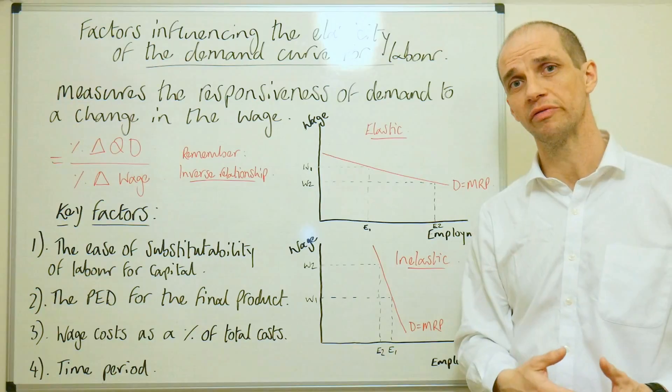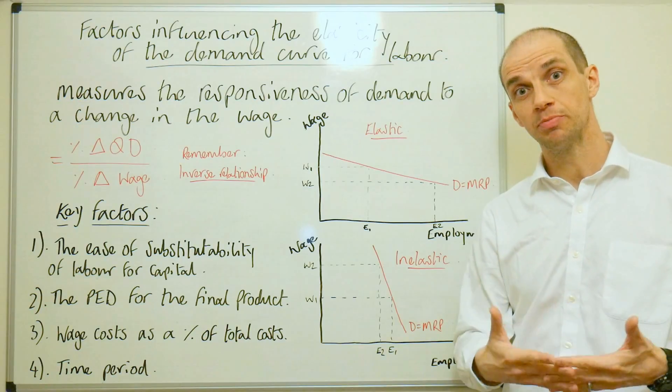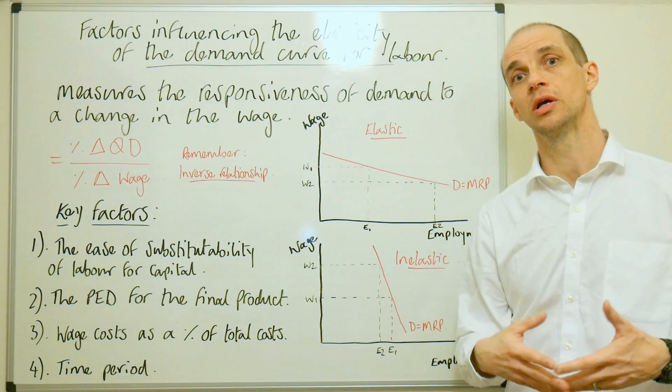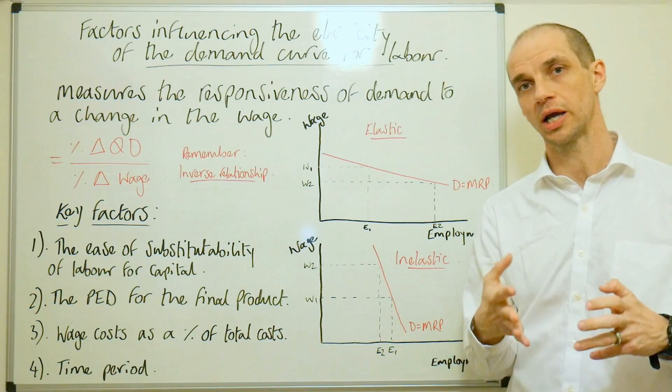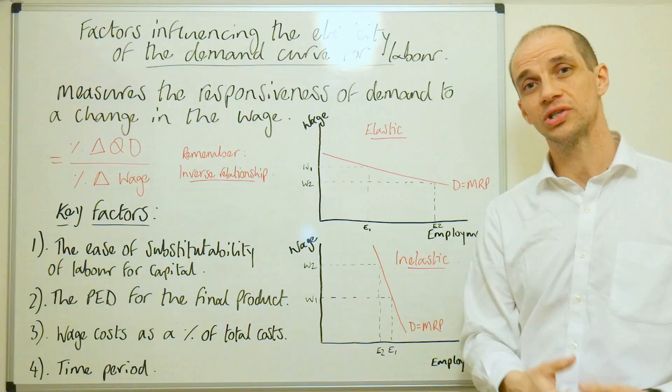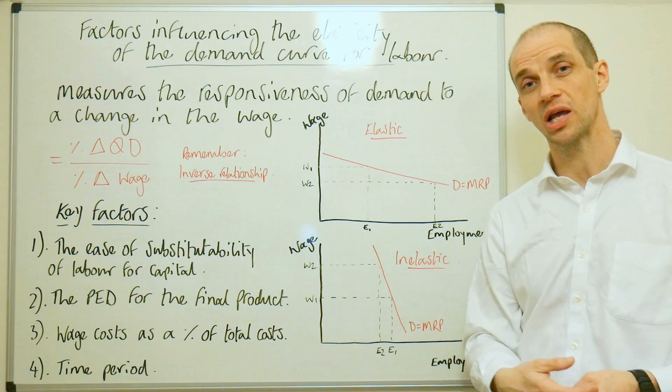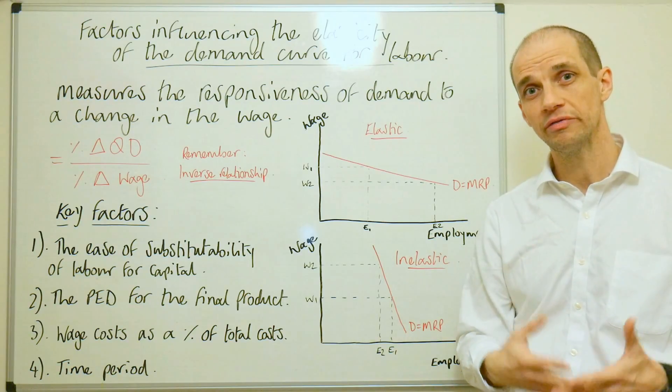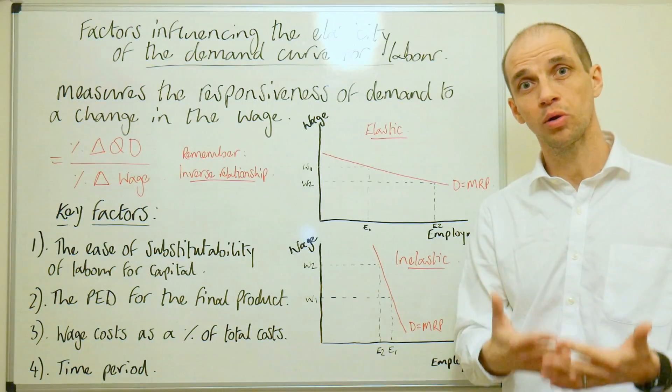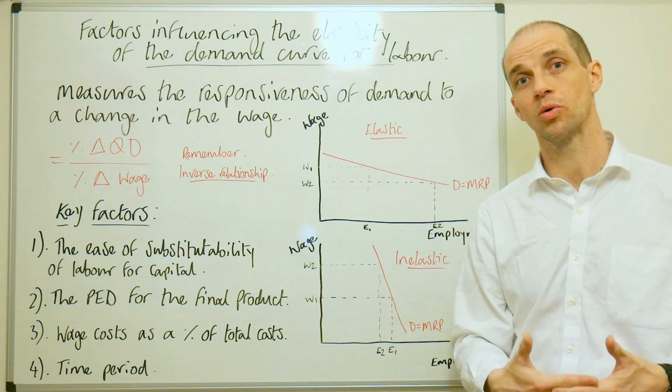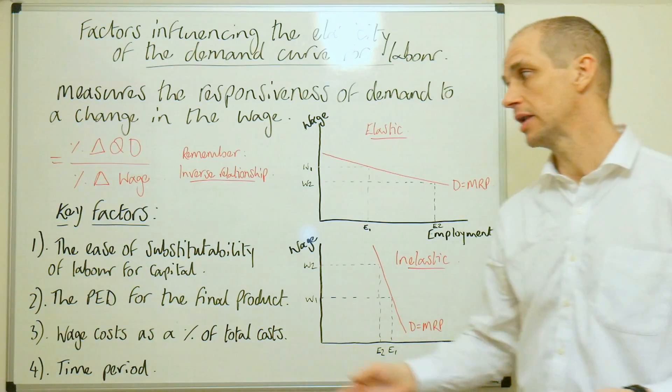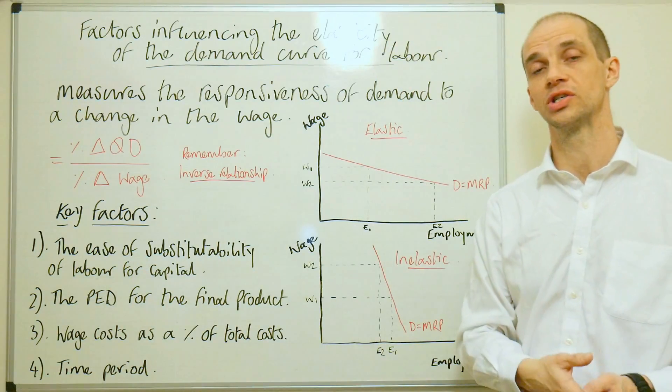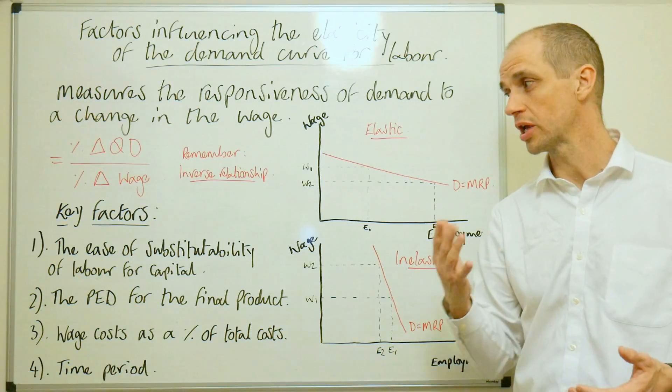The example we've referred to before has been about supermarkets, and checkout assistance. Yes, there are a need for a certain number of checkout assistance. But at the same time, there's also a convenience element in having self-service tills where employees are no longer actually required. So after that capital investment is conducted, then the labor is no longer actually required to staff those areas.